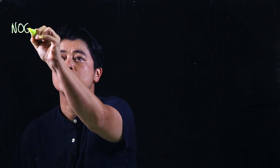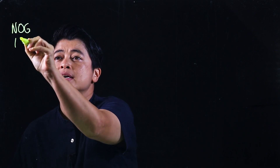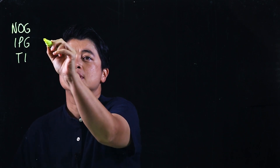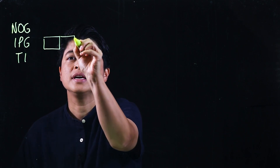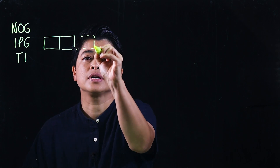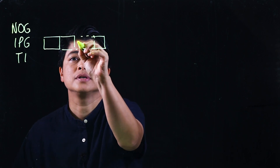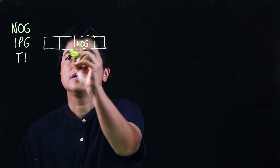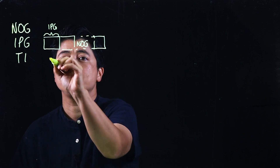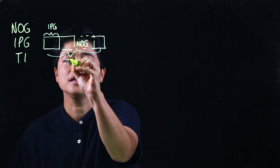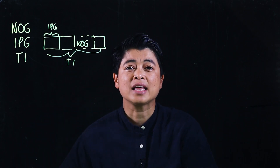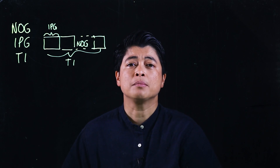The simple bar model is equivalent to number of groups, items per group, and total items. This represents the number of groups, this represents the items per group, and this represents the total items.